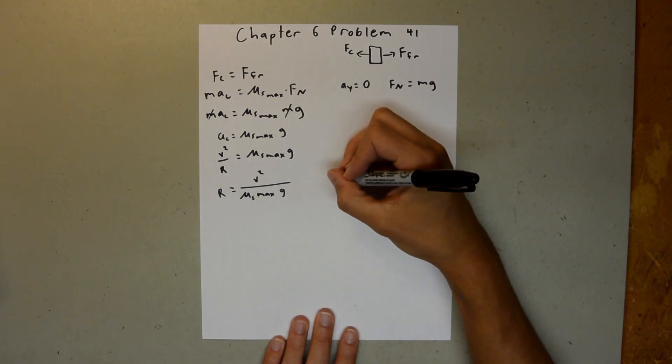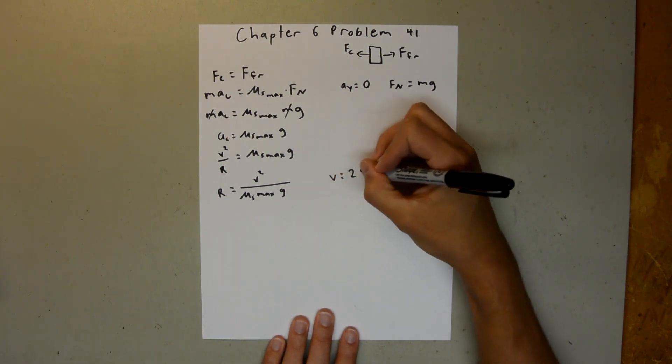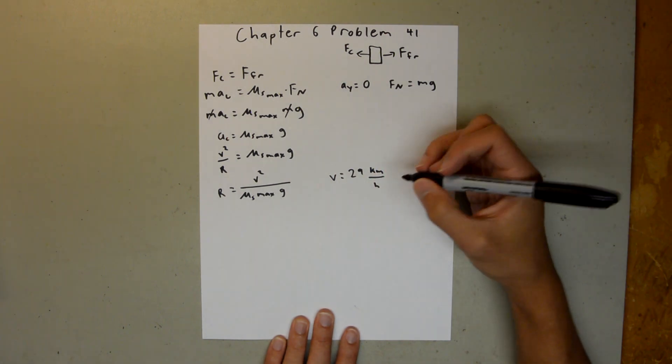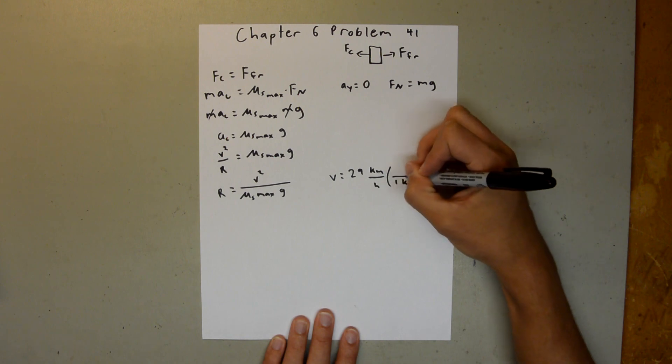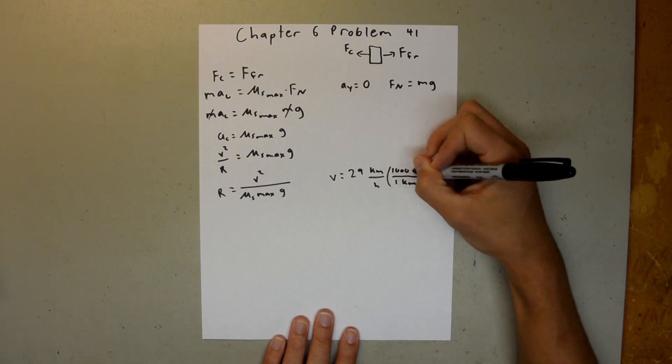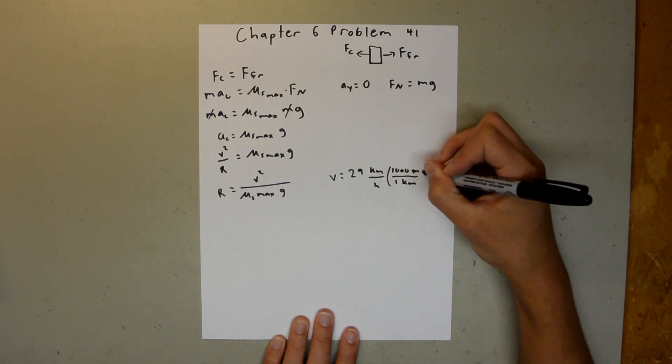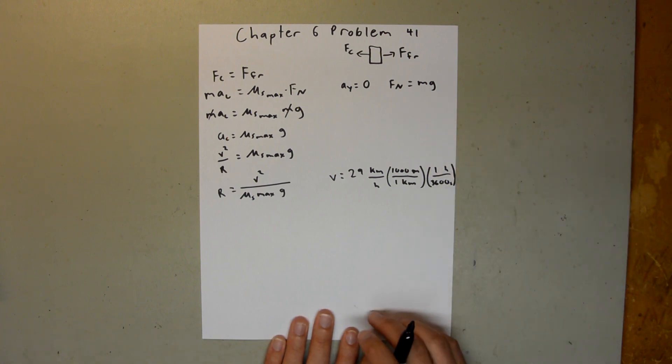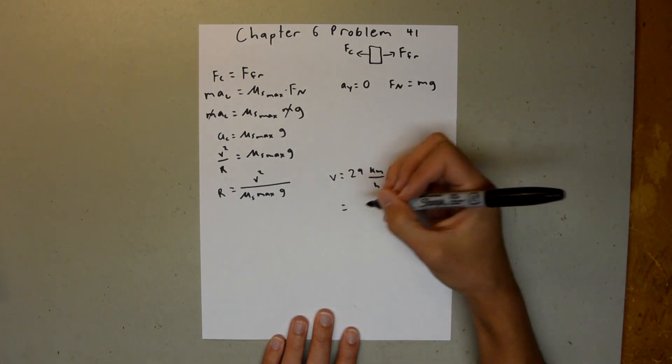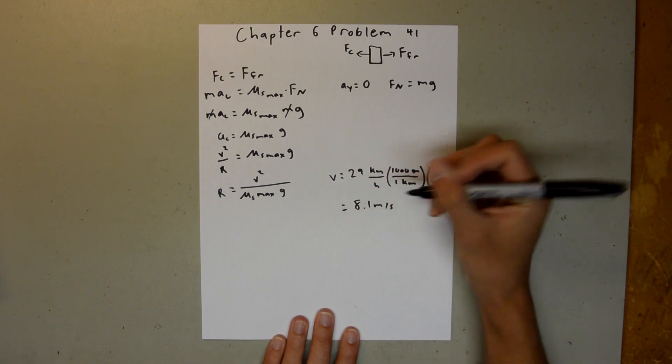And so we know our velocity that's given in the problem, 29 kilometers per hour, and we need to convert that to meters per second. So we know that 1 kilometer is equal to 1,000 meters. And then we also know that 1 hour is 3,600 seconds. And so when you plug all that into your calculator, you should get 8.1 meters per second.